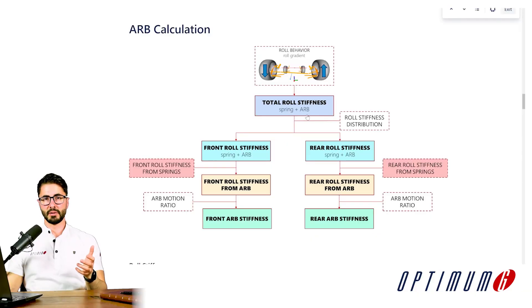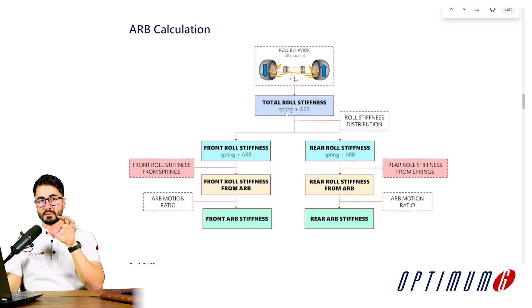Since roll gradient is an angle measurement, it's not very easy to calculate the anti-roll bar from there directly, so let's try to convert that into stiffness. In order for the car to have a roll gradient of 0.5 deg/G, we need to calculate the total roll stiffness — from both springs and anti-roll bar combined. Now that we know the total roll stiffness, we want to calculate the anti-roll bar contribution separately.